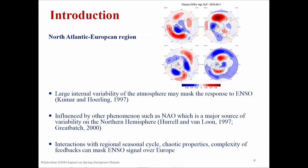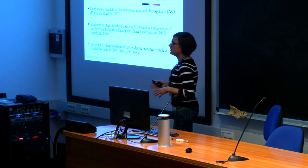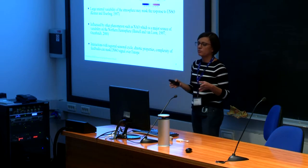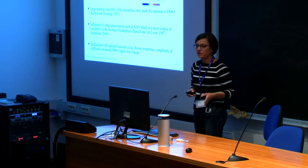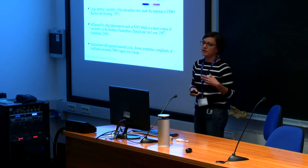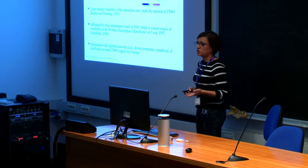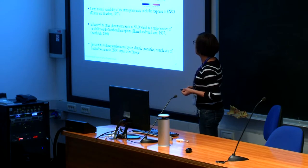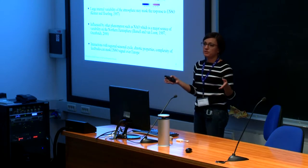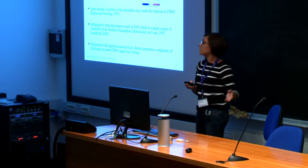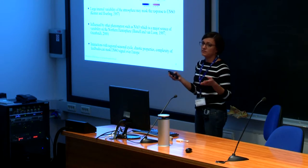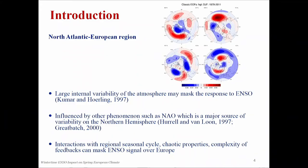The North Atlantic European region is associated with large internal variability of the atmosphere. There are also other phenomena that might have an even stronger impact on European climate, like the North Atlantic Oscillation. Tropical Pacific, particularly the Niño 3.4 region, is quite far from Europe. Interactions with the regional seasonal cycle, chaotic properties, and complexity of feedbacks may mask the ENSO impact over Europe.